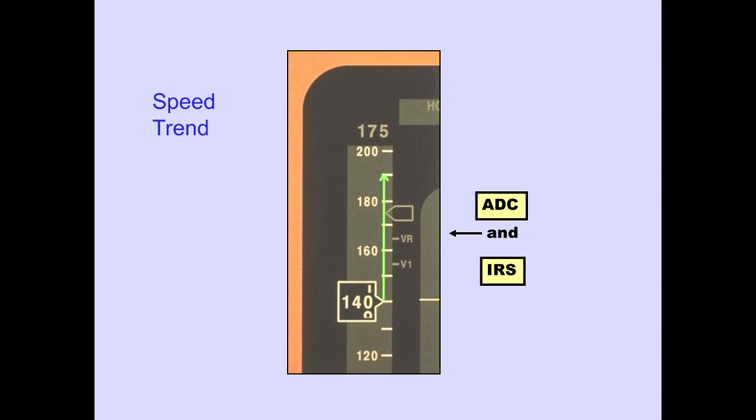A speed trend indication displays the rate of acceleration or deceleration. A longer arrow denotes a larger rate. The tip of the green arrow indicates predicted airspeed in 10 seconds. The air data computer and IRS provide this information.